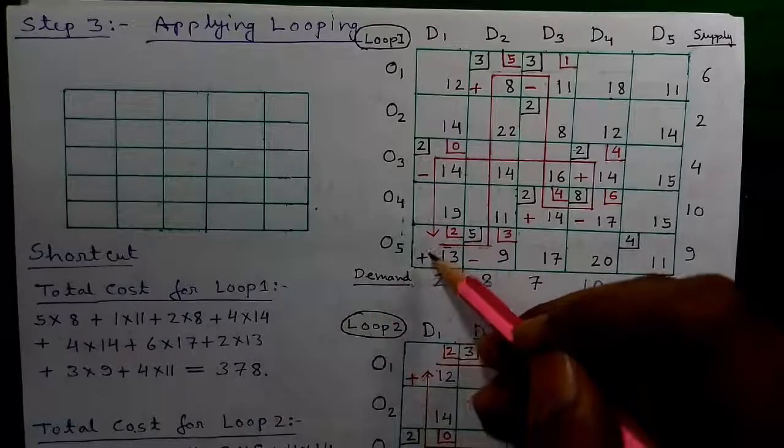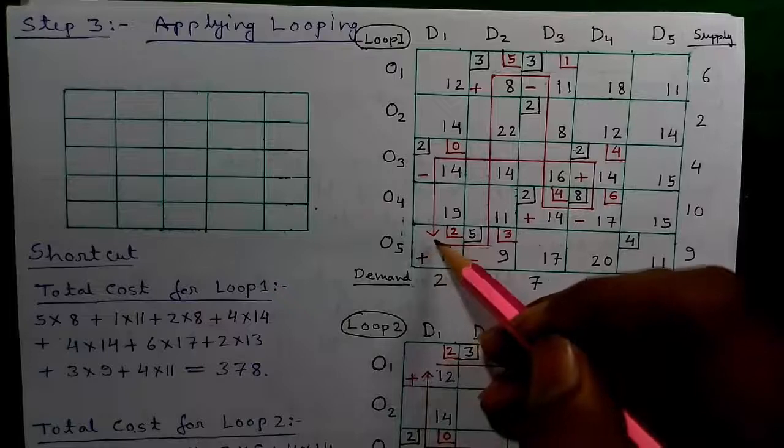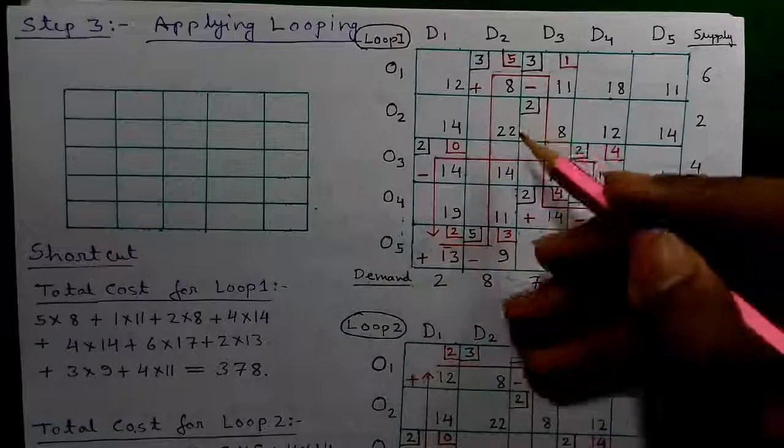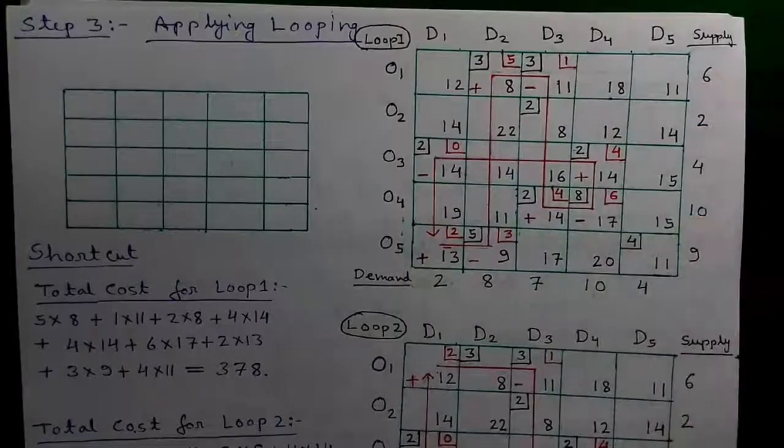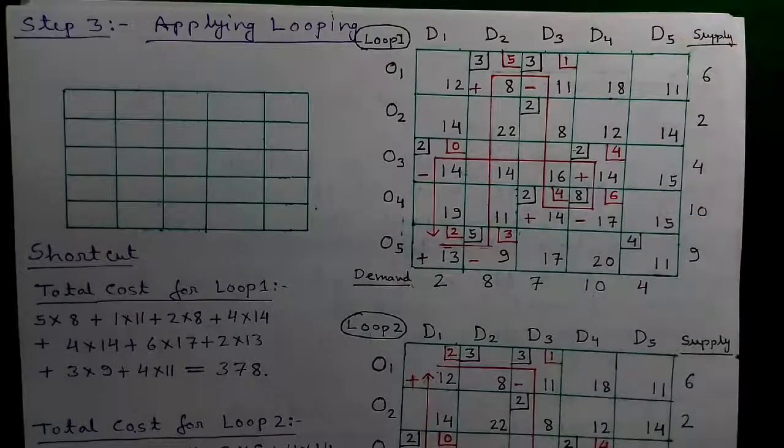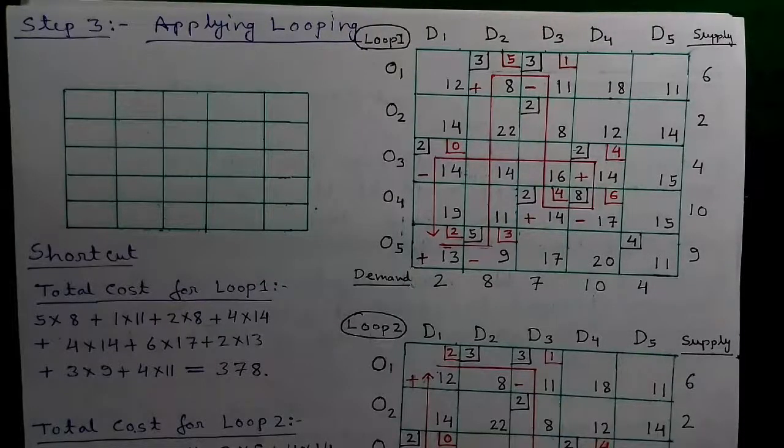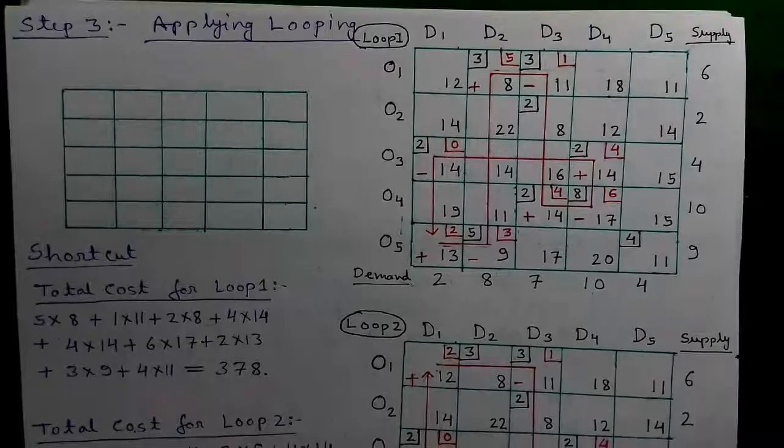In our case we had two negative values and both values were the same. So we need to make two loops for the same question. The two loops will be different and we have to do two calculations for two loops and evaluate them separately.